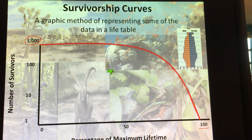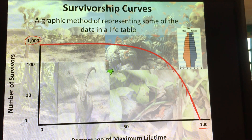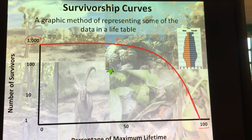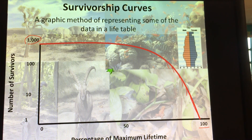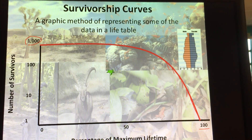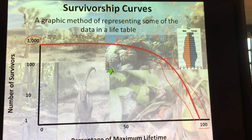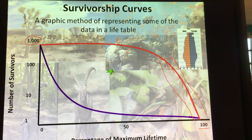Some people might die a few years before 80, which is what this part of the graph is showing us. So when we look at this red line, out of 1,000 babies born, a lot of them survive until adulthood and then die later on in life. This part of the graph would have a high per capita death rate.